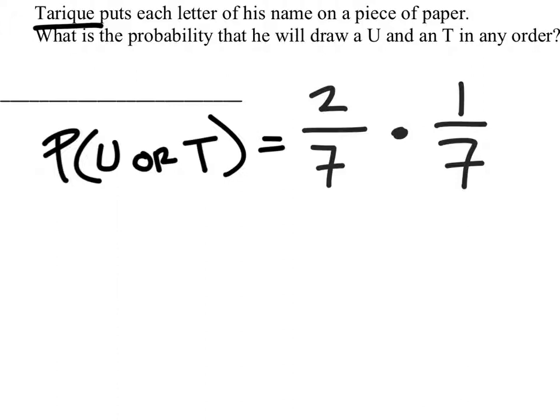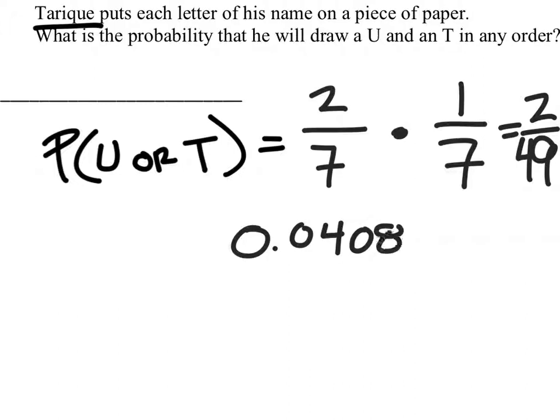And there was seven possible choices. So that would give us two out of 49, which as a decimal gives us 0.0408, which is also 4.08%.